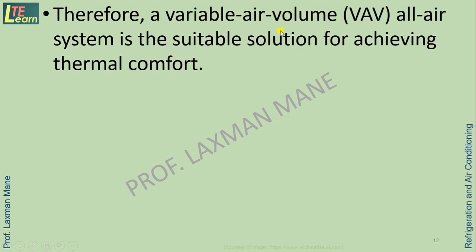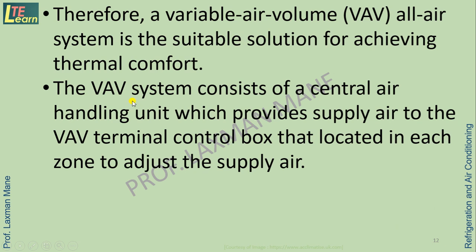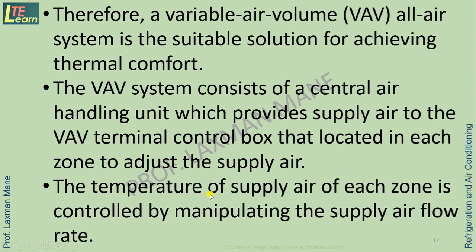Therefore, a Variable Air Volume system is a suitable solution for achieving thermal comfort. The VAV system consists of a central air handling unit which provides supply air to VAV terminal control boxes located in each zone to adjust the supply. The temperature of supply air in each zone is controlled by manipulating the supply air flow rate.